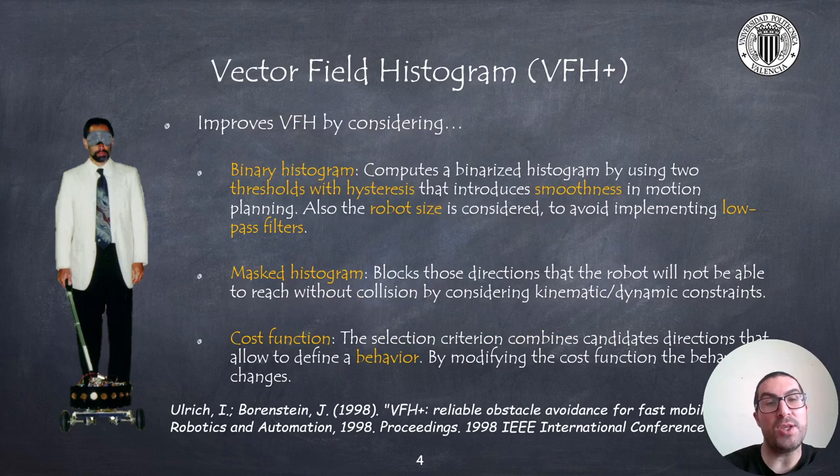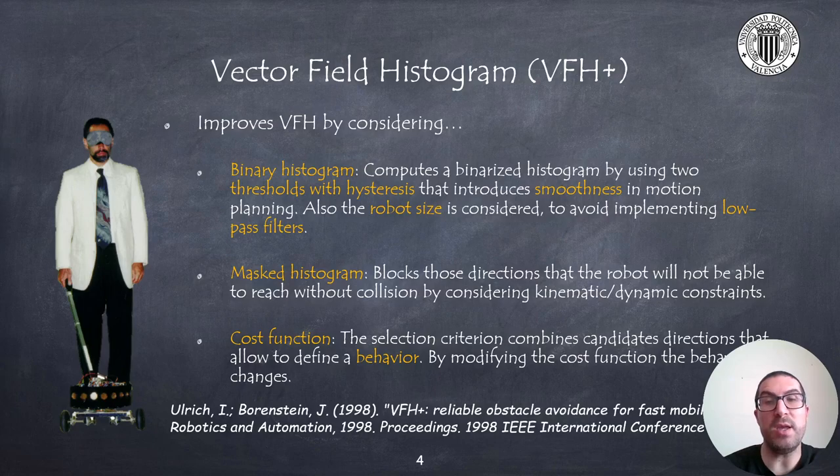The VFH+ technique introduces some improvement over the previous technique by incorporating a binary polar histogram, which uses two thresholds with hysteresis, which improves the smoothness of the resulting motion planning. In addition to this, it also considers the robot size in order to build the primary polar histogram, avoiding the need to implement a low-pass filter of that histogram.